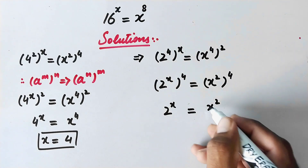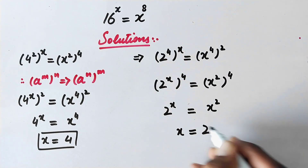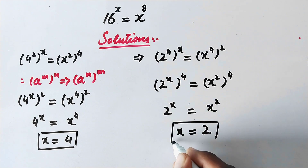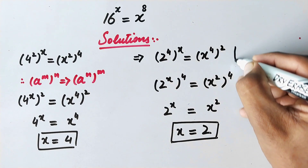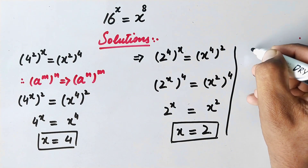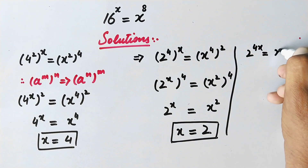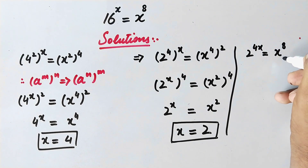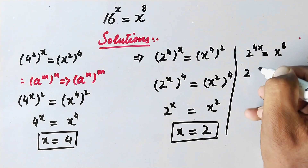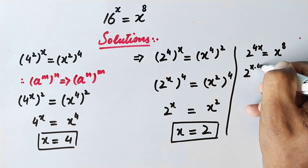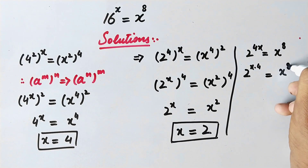By comparing these values we get x equal to 2. We may also get this solution by another way. Here we have 2 to power 4 times x is equal to x to power 8. In the next step we can write 2 to power x times 4 is equal to x to power 8.